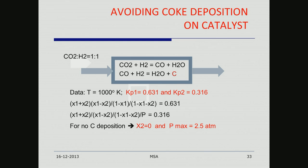Taking another example: CO₂ + H₂ → CO + H₂O, and then CO + H₂ can give carbon deposition. Carbon can deposit on the catalyst and make it ineffective, so you want to know what pressure range to operate in. At T = 1000°C — temperature normally chosen on the basis of kinetic considerations — you can do this calculation quickly and show that for pressures below 2.5 atm you will have no carbon deposition. These are very powerful conclusions from thermodynamics.